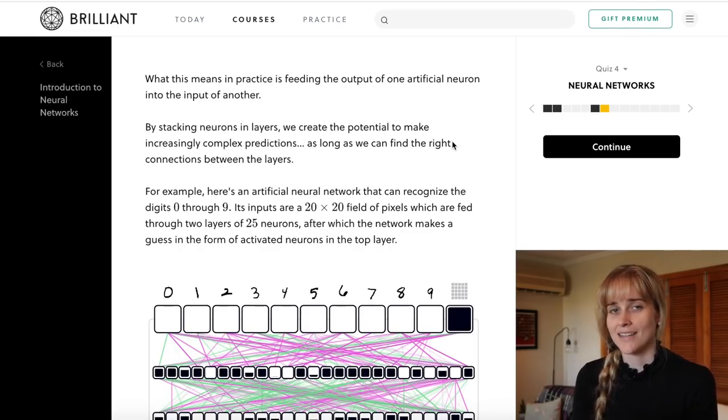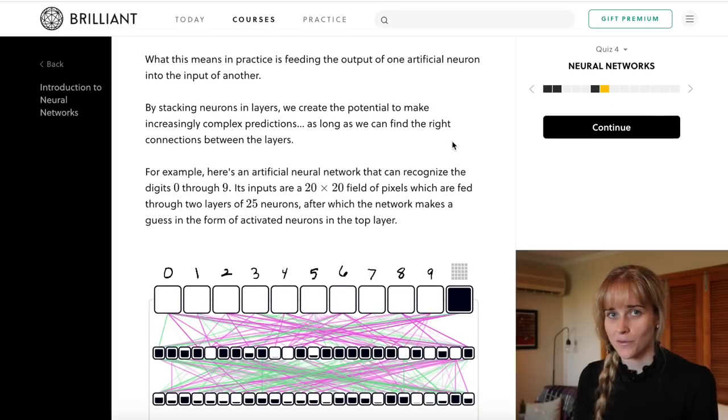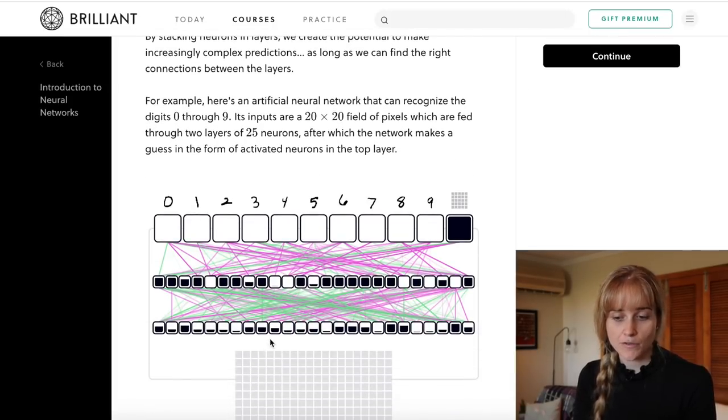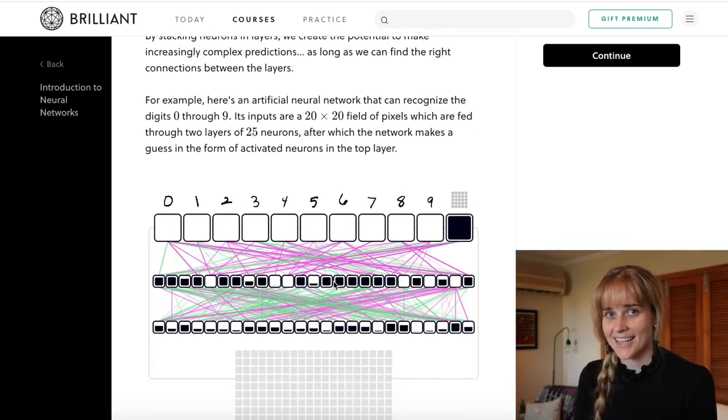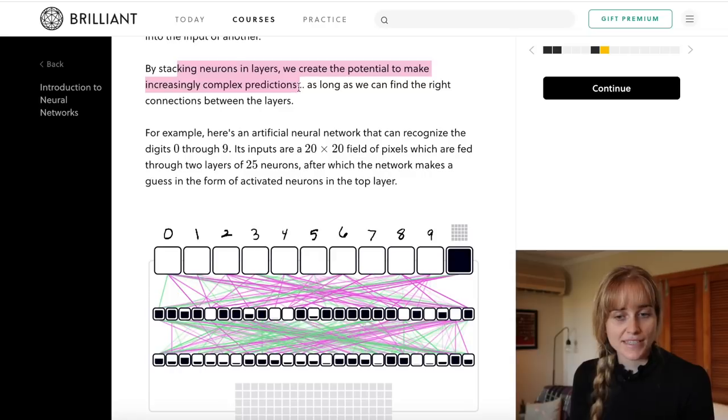The real power of the neurons comes from wiring them together into a network. Our neural network is kind of a waterfall of individual neurons. We feed the output of one neuron into the input of another and it cascades like that along the network.